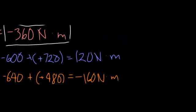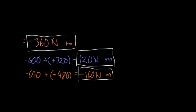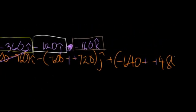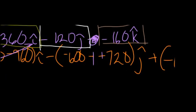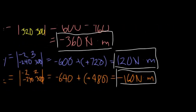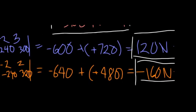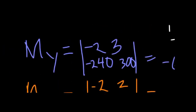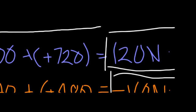Those are the answers — though there may be a sign issue to double-check with the 120 Newton-meters result. The moments are: M_x = negative 360 N·m, M_y = 120 N·m, M_z = negative 160 N·m.